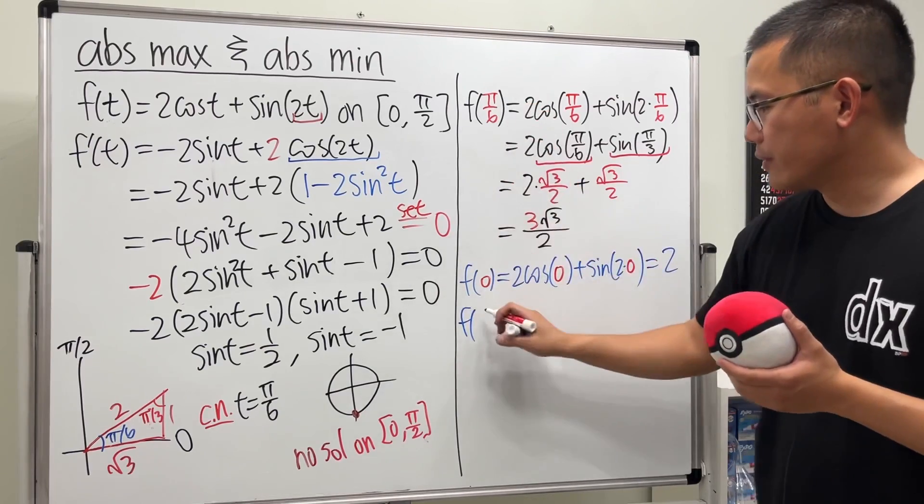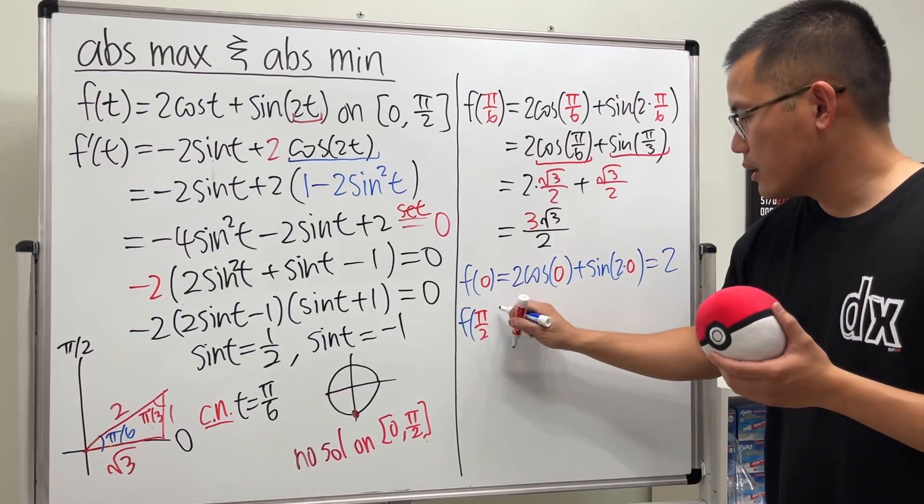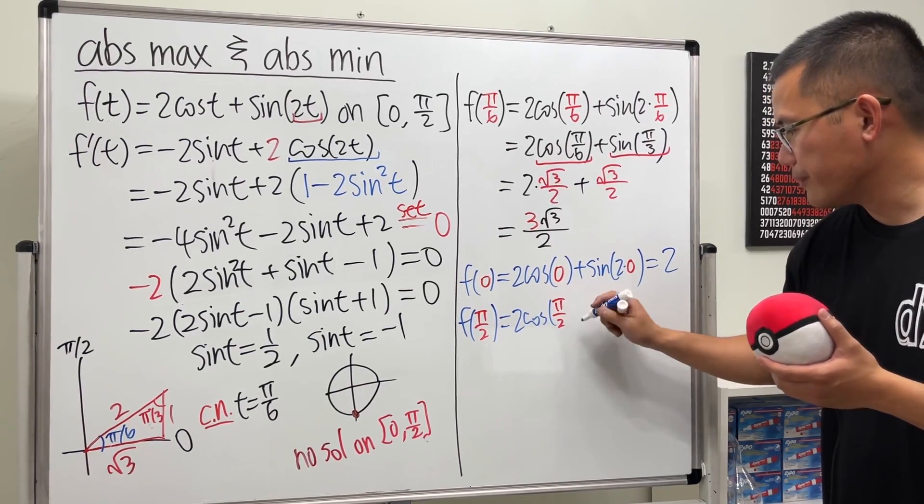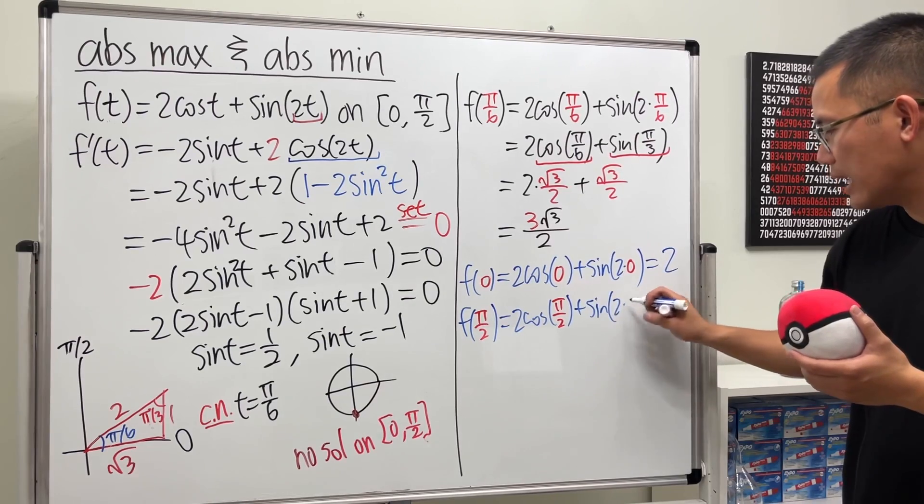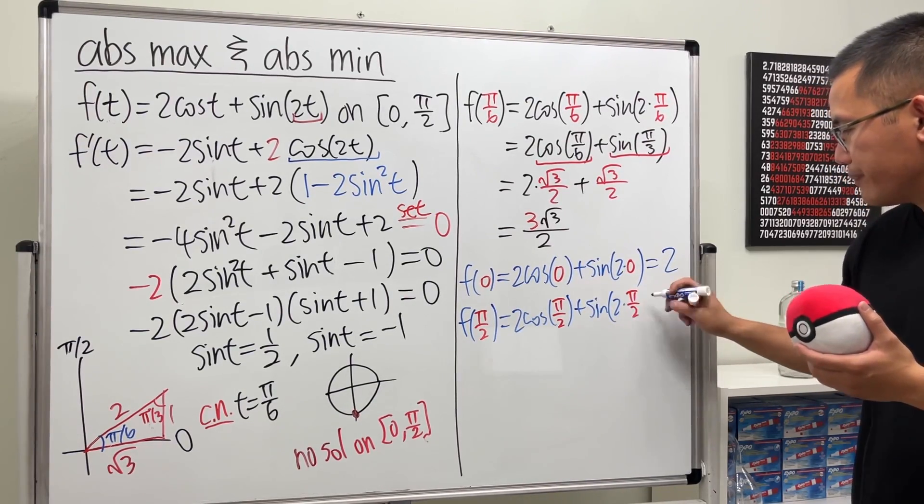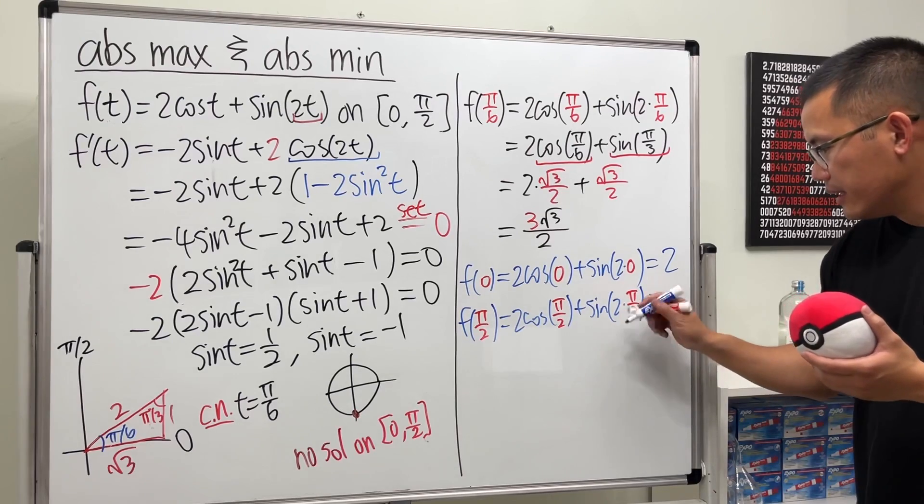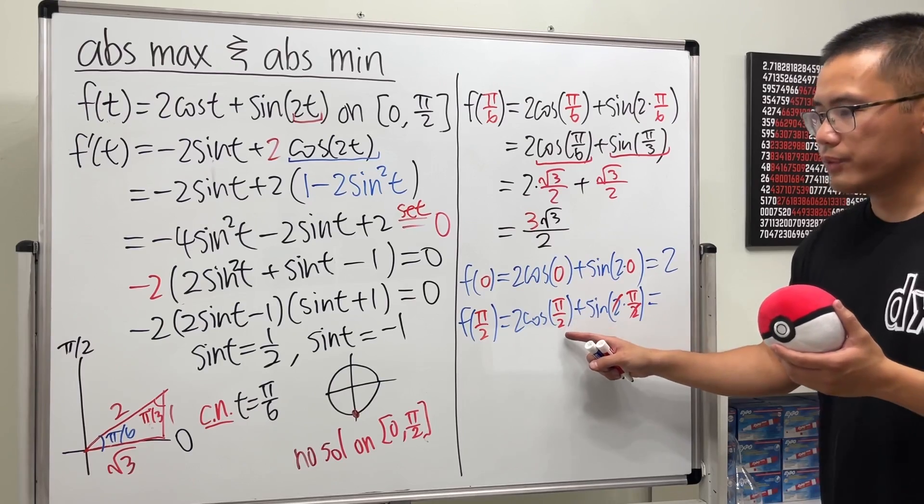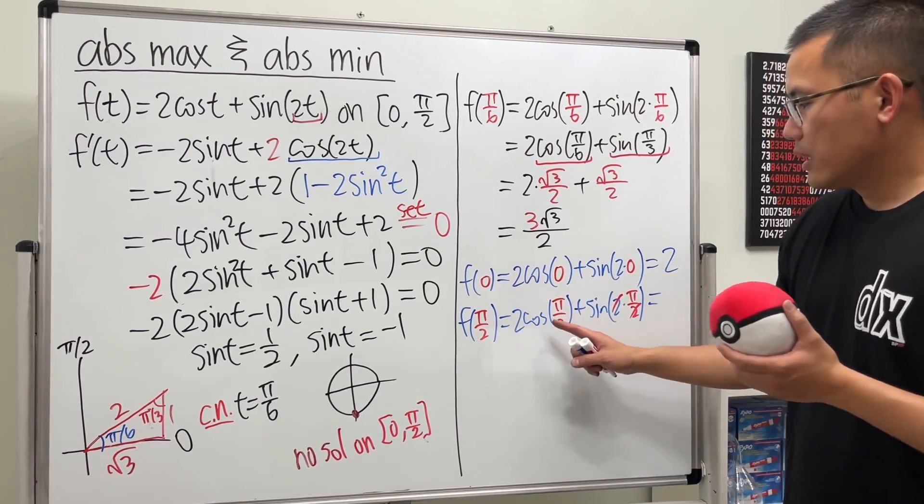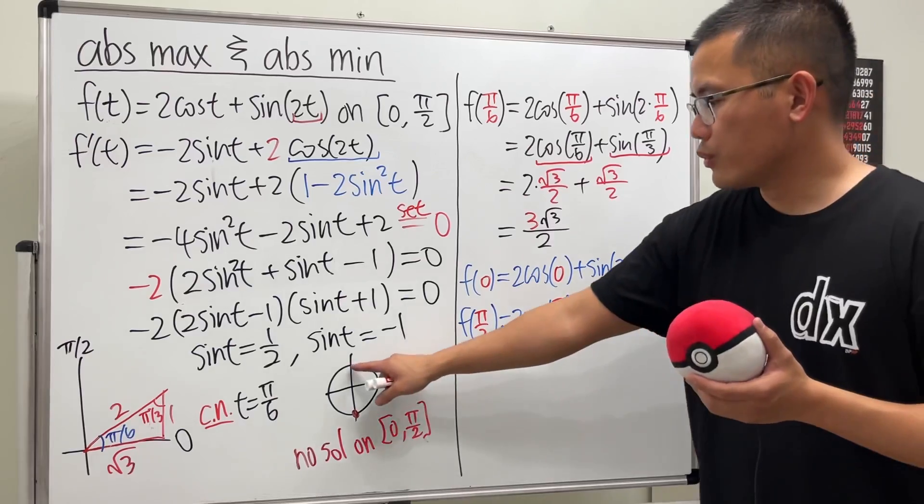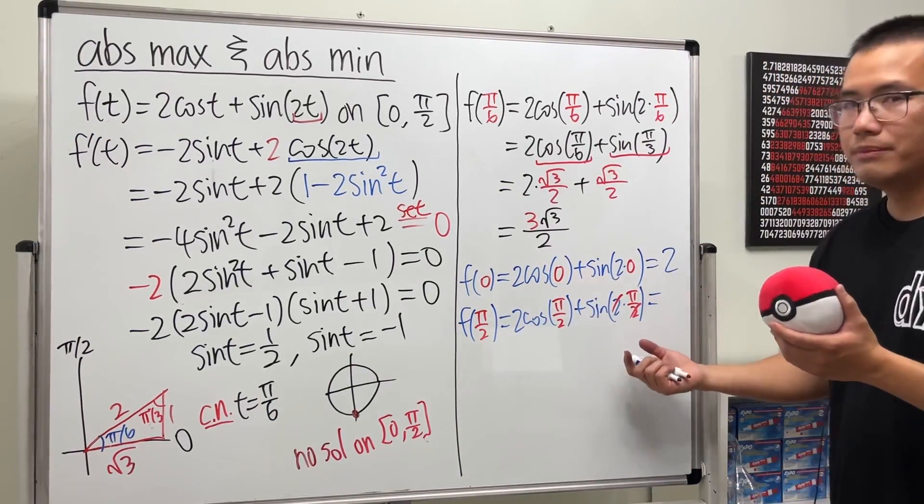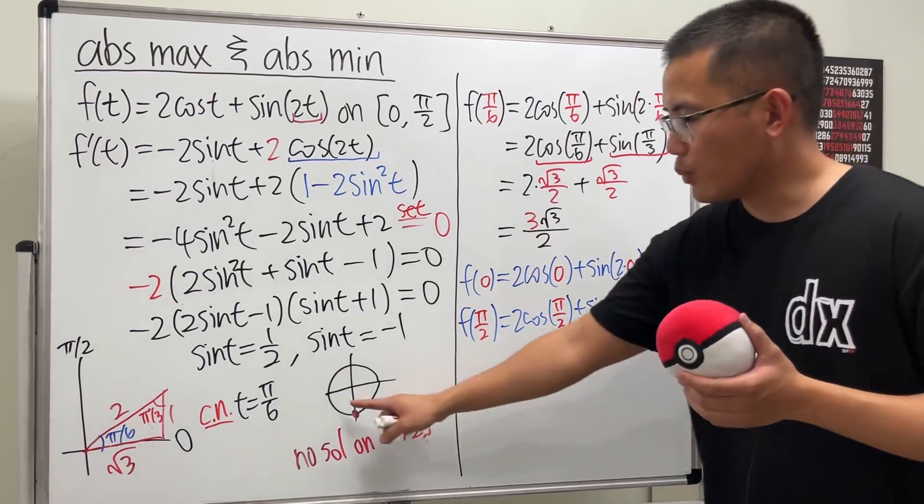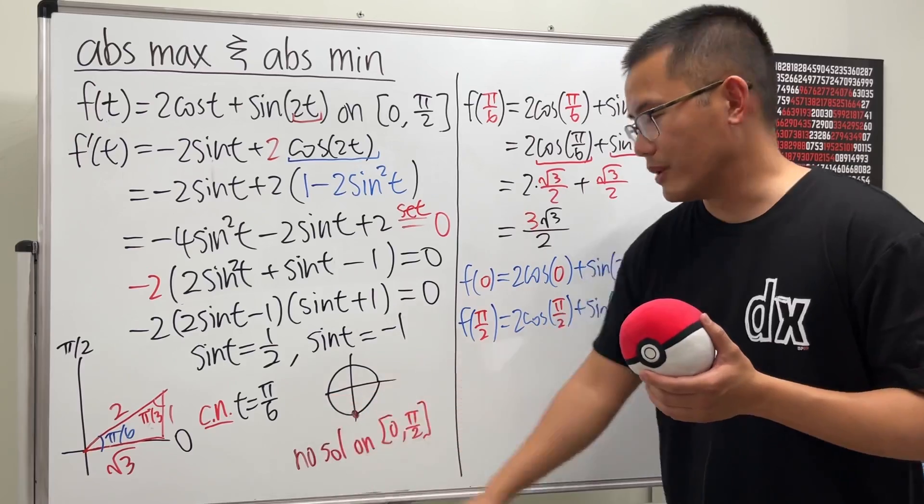And lastly, we check π/2. So this is 2 times cos(π/2). And then plus sin(2 times π/2). Check this out. This and that cancel, sin(π) is 0. Cos(π/2) is also 0. Because we look at the x value right here, which is 0. So 0 plus 0, it's just 0. And by the way, sin(π) is 0. Because we look at the y value right here, which is 0.